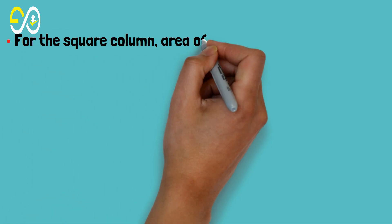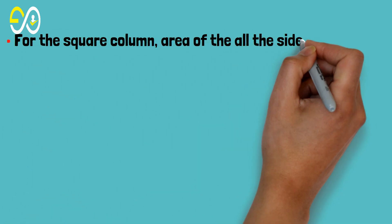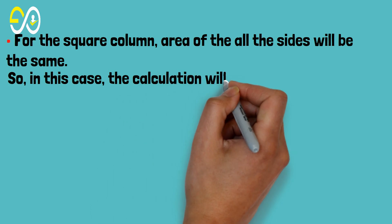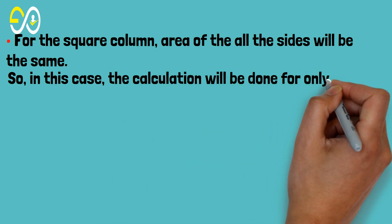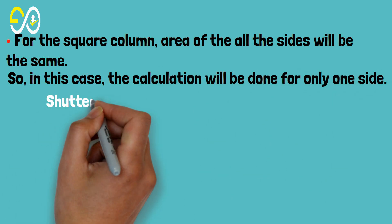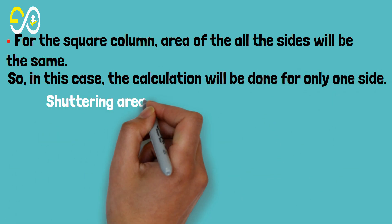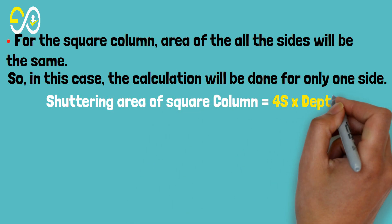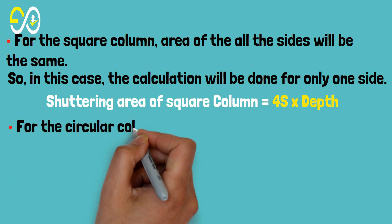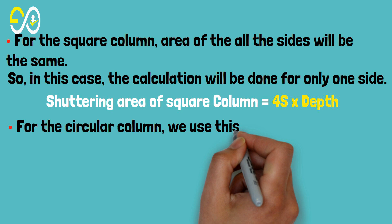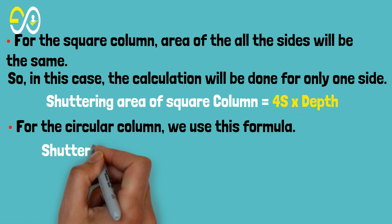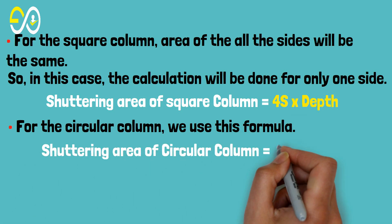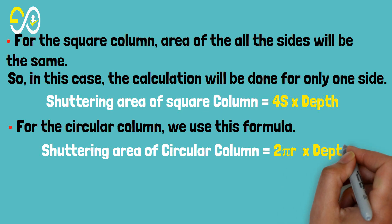For a square column, the area of all sides will be the same, so the calculation is done for only one side. Shuttering area of square column equals 4 times (1 side times depth). For a circular column, the formula is: shuttering area of circular column equals 2 times pi times radius times depth.